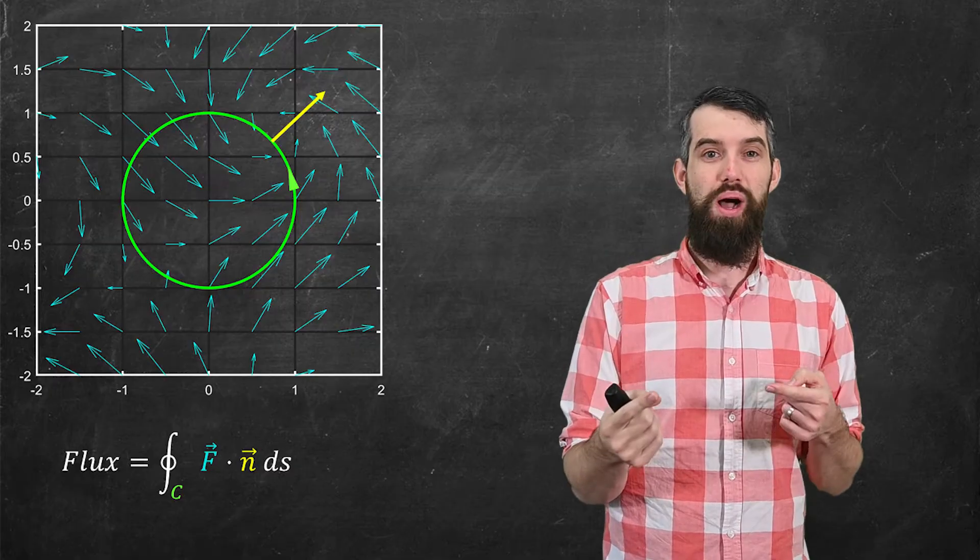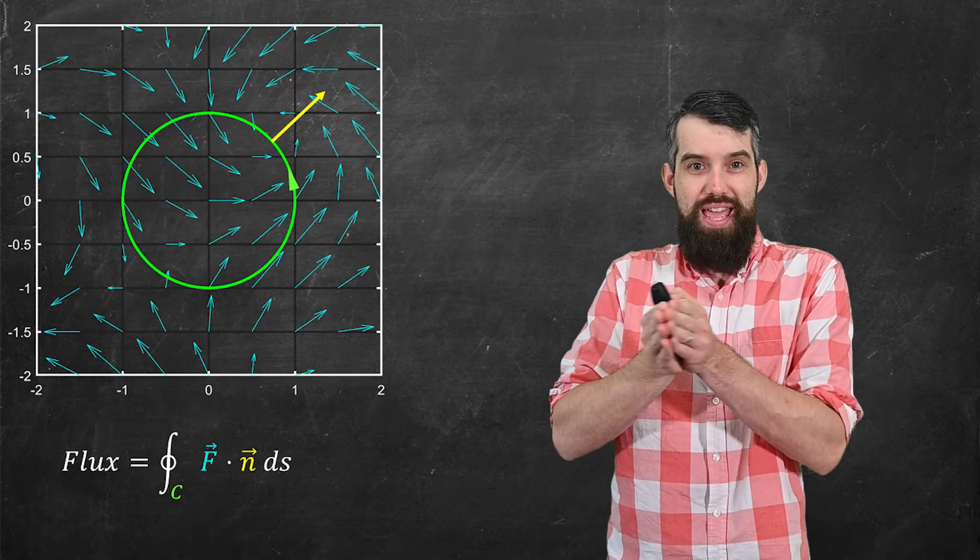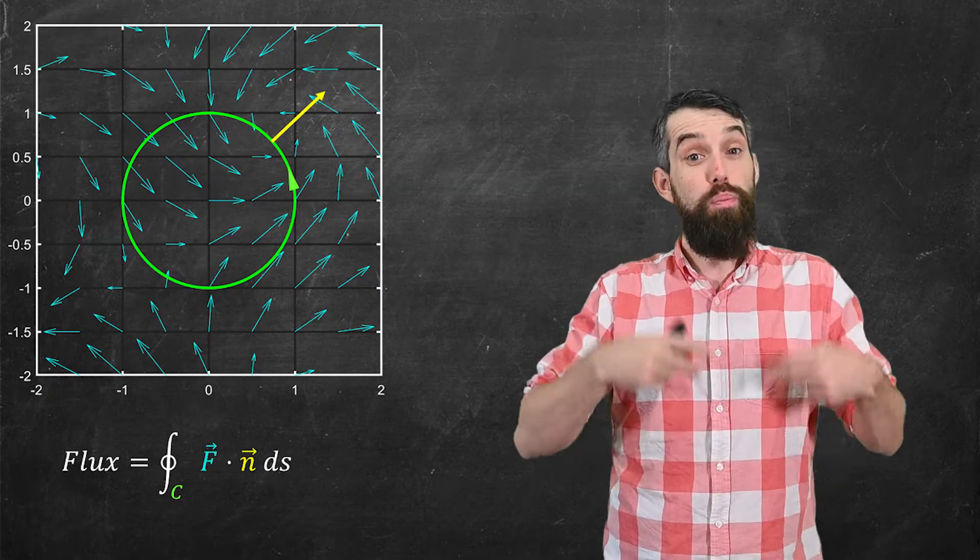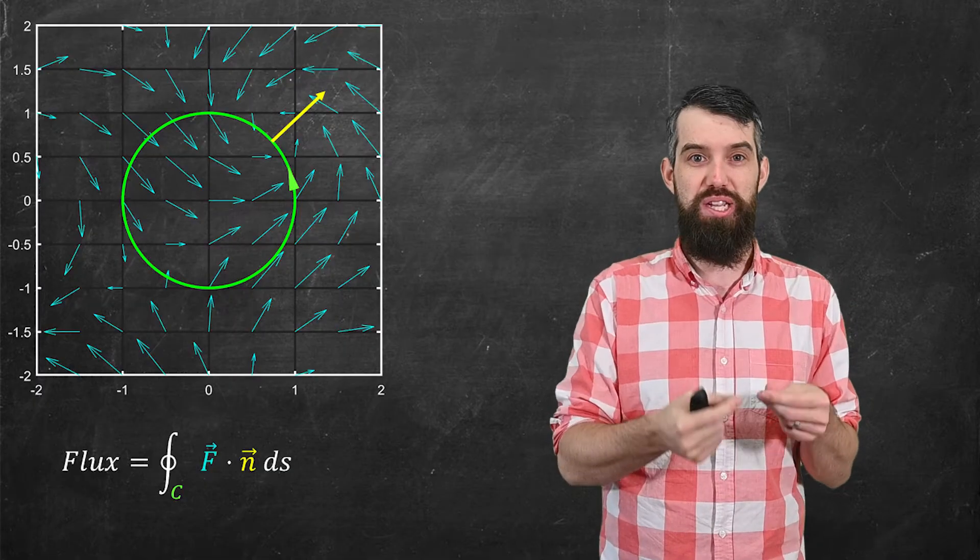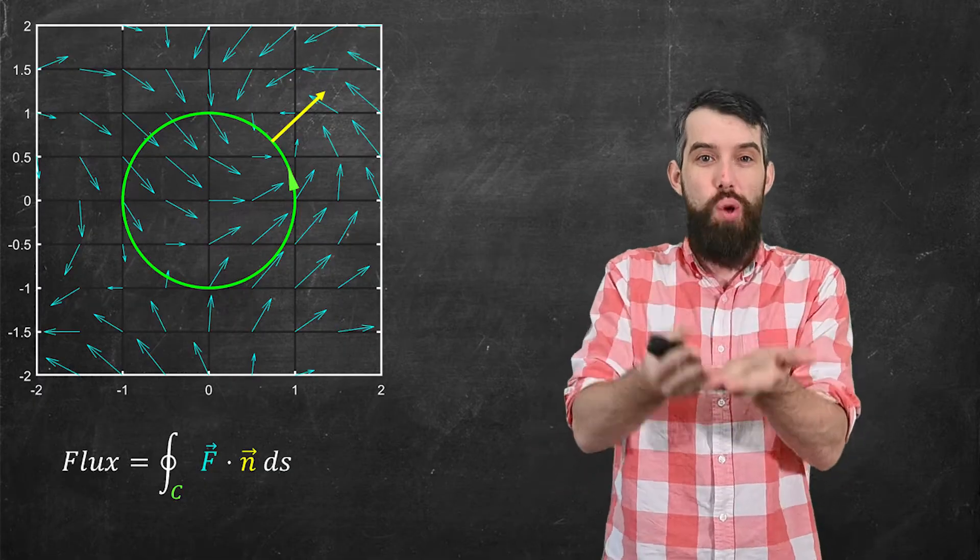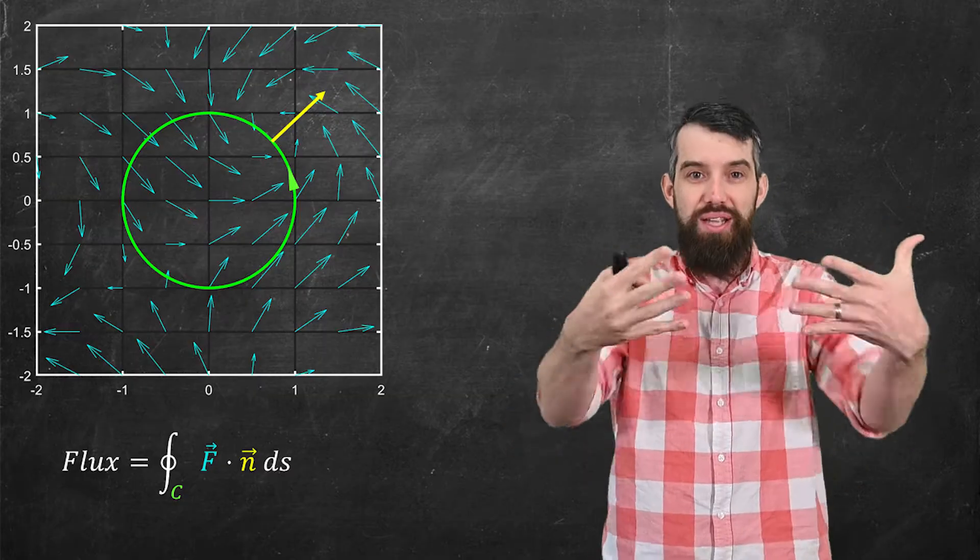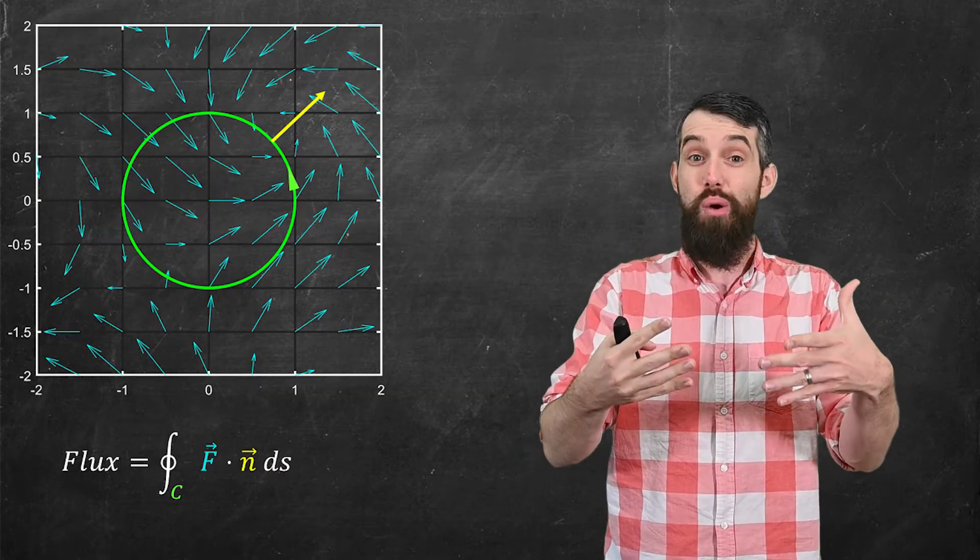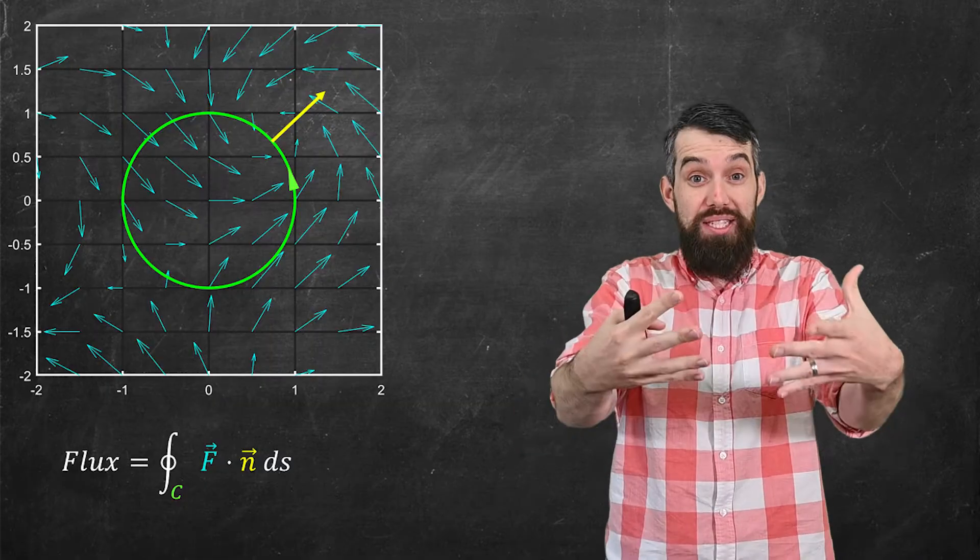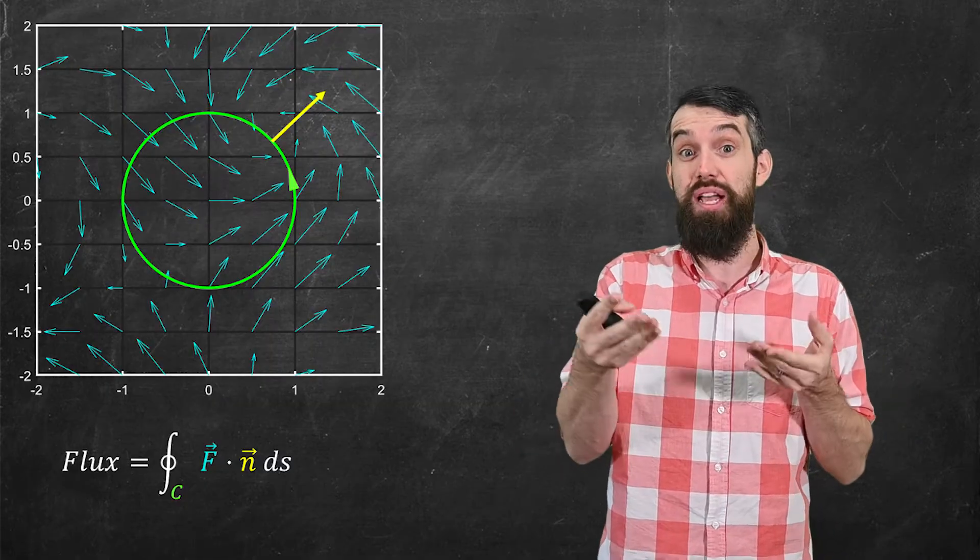And basically the idea was the dot product with n indicated the proportion of the field f at a particular point that was pointing normal. If the field was just tangential along the curve, then there would be no crossing of that boundary. But if we want to know how much is stuff crossing the boundary, then f dot n gives us a measure of that.